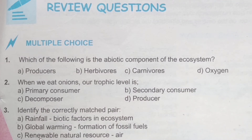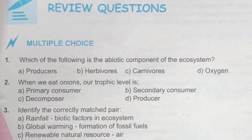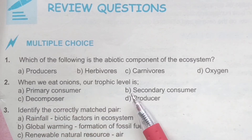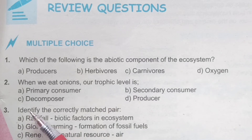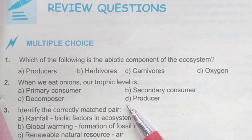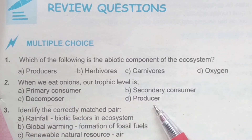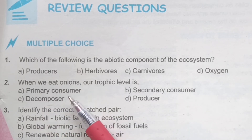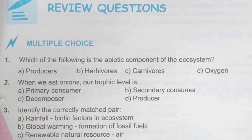Second statement is: when we eat onions, our trophic level is — A option: primary consumers. B option: secondary consumers. C option: decomposers. And D option: producers. The correct option of this statement is primary consumers, A option.